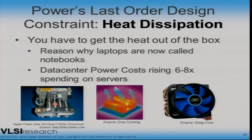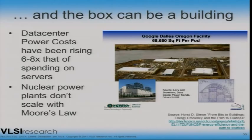This Apple Power Mac G5 has a little radiator and a whole cooling device built by Delco — a little pump with a fan, like a little automotive car — and that was when Apple decided to get away from that processor and go to Intel because of the power dissipation. The box can also be a whole building — this is the Google Dallas Oregon facility. They put them next to power plants because they use so much power. Nuclear power plants don't scale with Moore's Law, so as we need more of these, we run into problems.